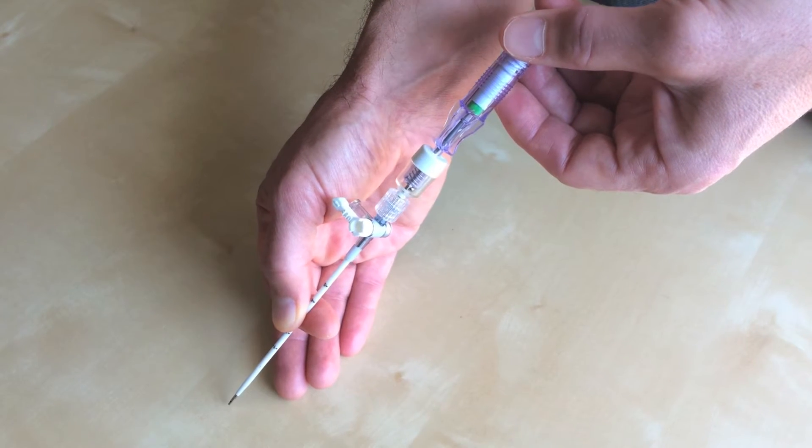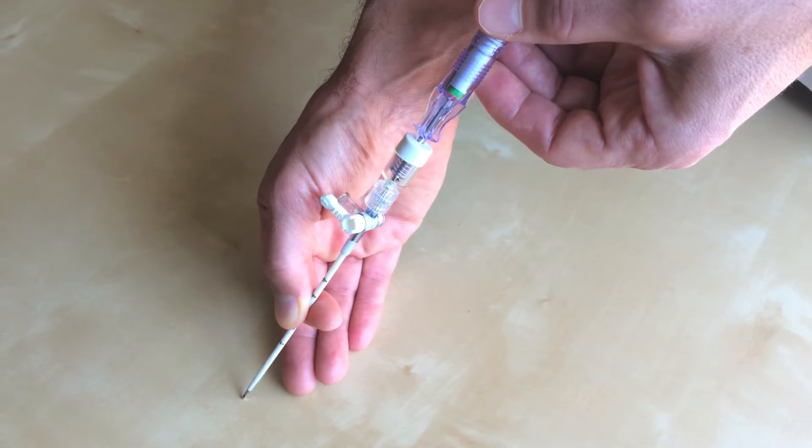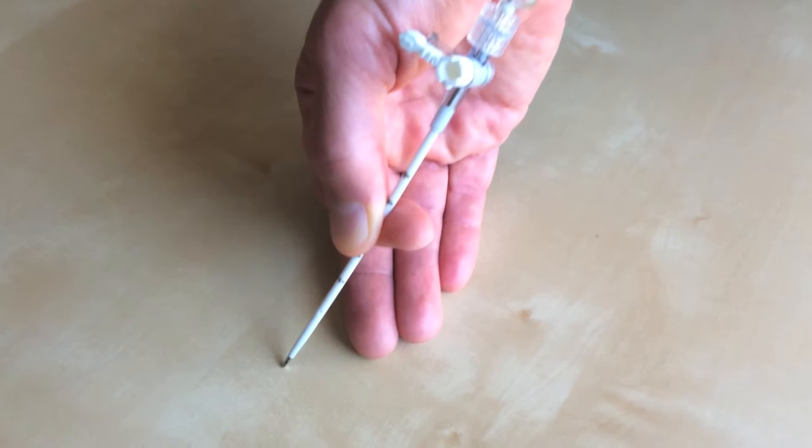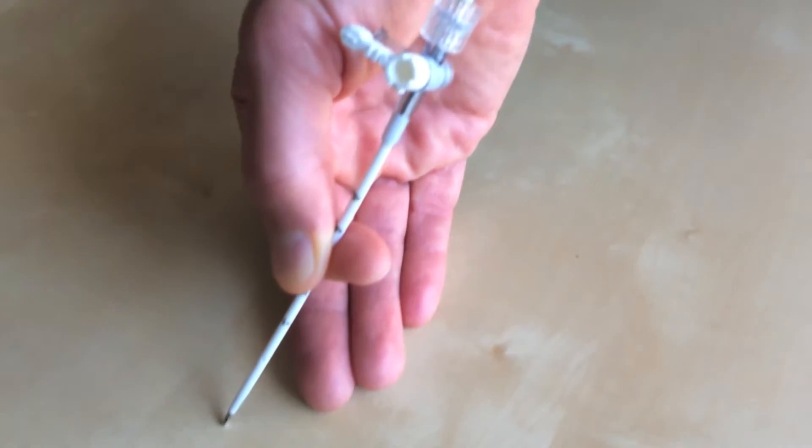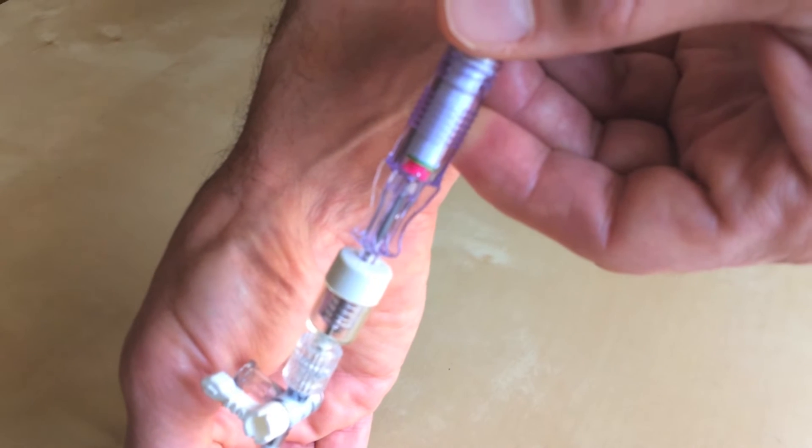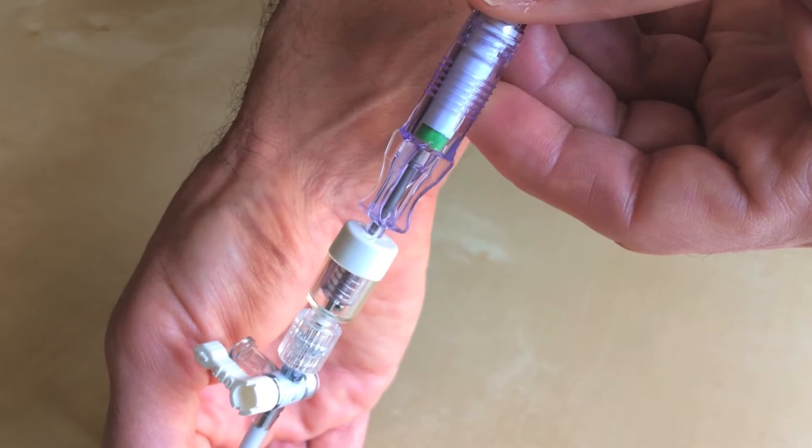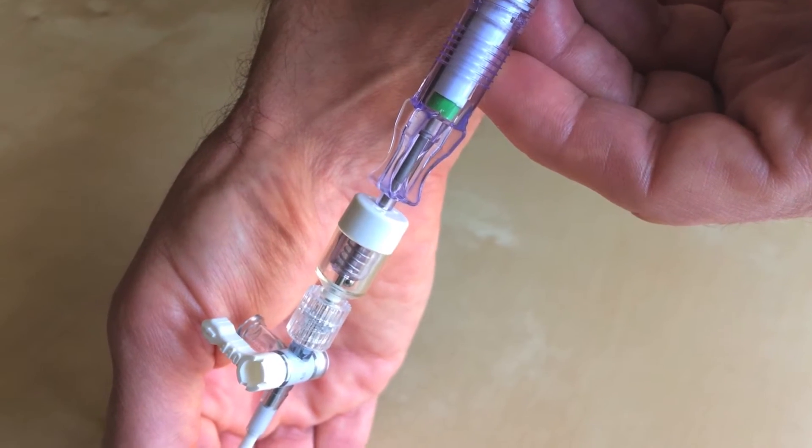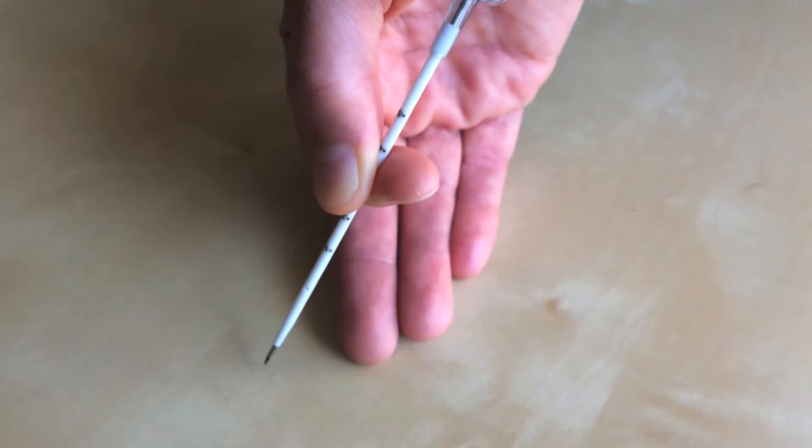When pressure is applied to the tip of the needle, the blunt end retracts exposing the sharp end and the indicator changes from green to pink. When pressure is released off the tip, the blunt end extends and the indicator changes from pink back to green.